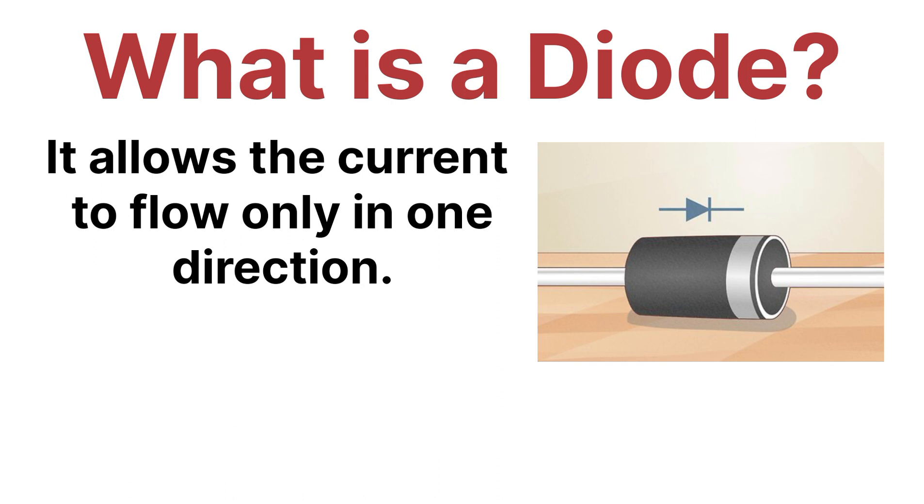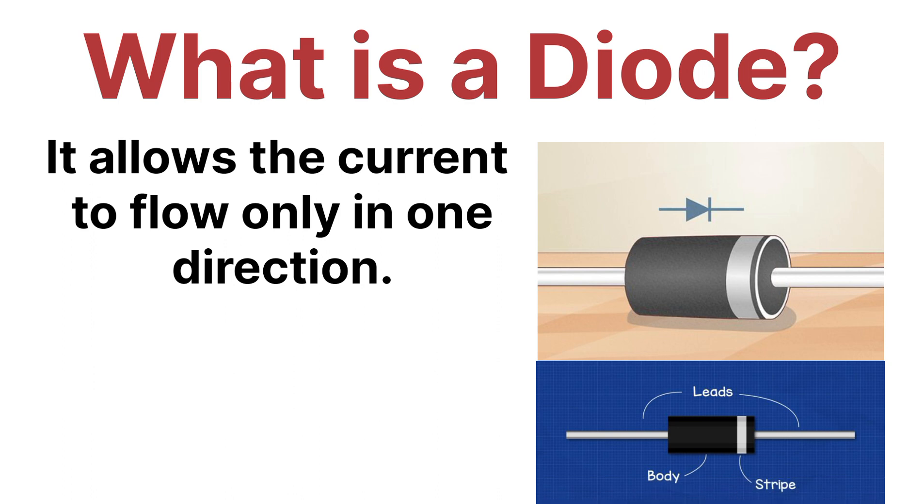It will always allow electric current to flow only in one direction. That's why it works as a one-way switch for the flow of electric current.